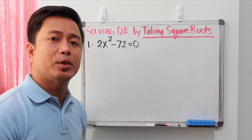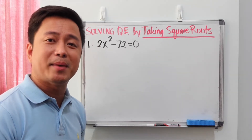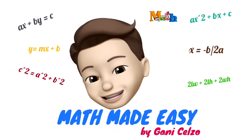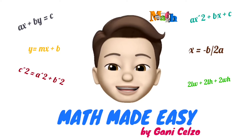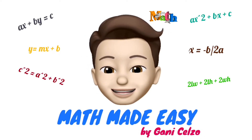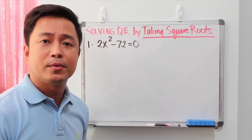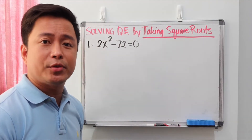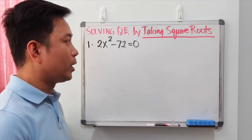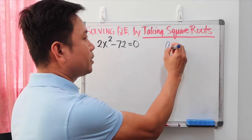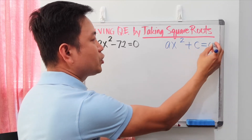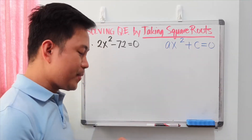Another way of finding the roots of a quadratic equation is by taking the square roots. The taking square roots method can only be used if the quadratic equation is in the form ax squared plus c equals 0, which means that the bx term is missing.